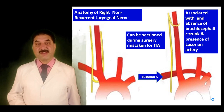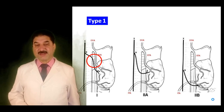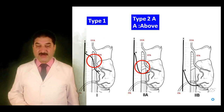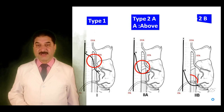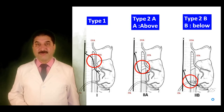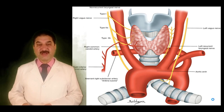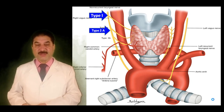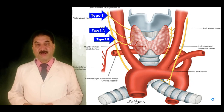As shown in this animation: in Type 1, the superior thyroid pedicle is accompanied by the non-recurrent laryngeal nerve. In Type 2A, the non-recurrent laryngeal nerve passes transversally, parallel to the inferior thyroid artery but superficial to it. In Type 2B, the non-recurrent laryngeal nerve passes transversally below the inferior thyroid artery — B for below. So in Type 1 the nerve passes with the superior thyroid vessels; in Type 2A it passes transversally and parallel to the trunk of the inferior thyroid artery but lies above it; and in Type 2B the inferior thyroid artery passes below the non-recurrent laryngeal nerve.